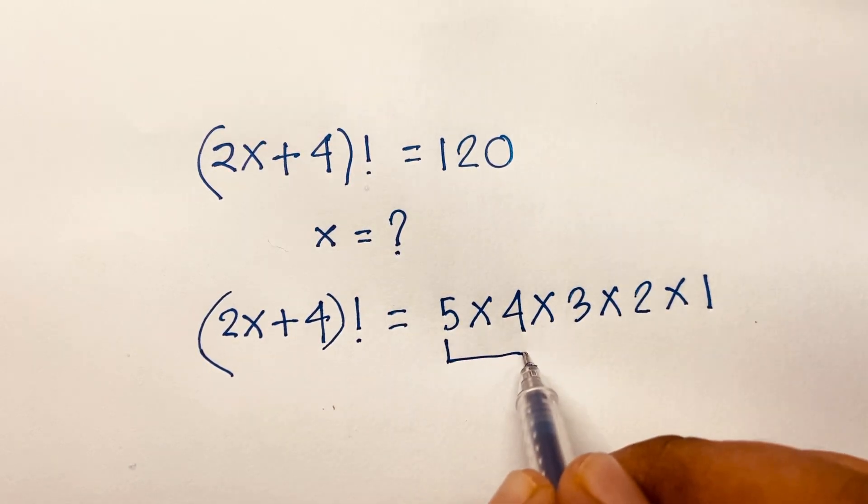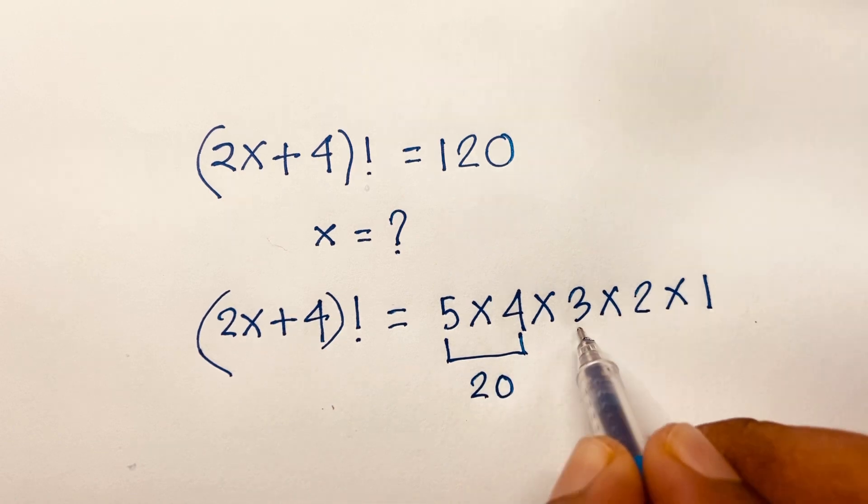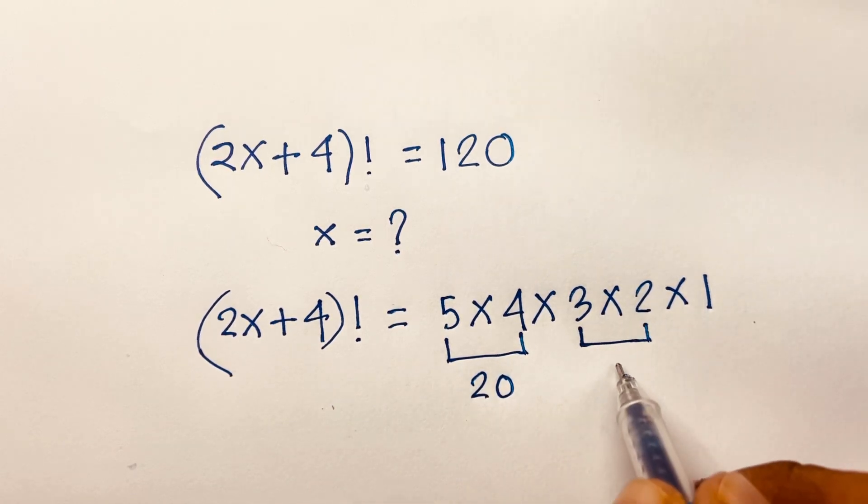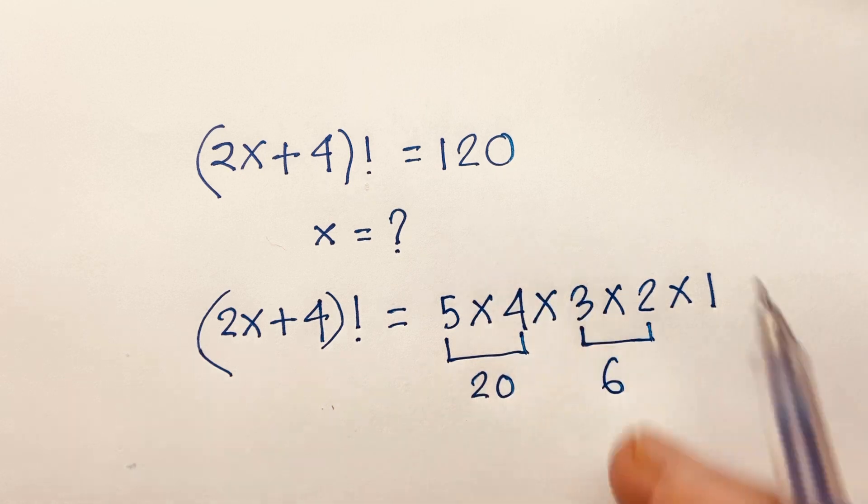Look, 5 times 4 is 20, and 3 times 2 is 6, so 20 times 6 equals 120.